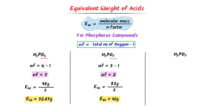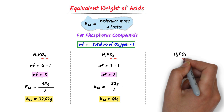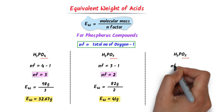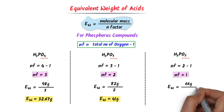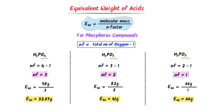In case of this compound, N factor is equal to oxygen atoms minus 1. The oxygen atoms are 2, so I write 2 minus 1 and get 1. The N factor of this compound is 1. Its equivalent weight is equal to the molecular weight, which is 66 gram, upon N factor which is 1. I get 66 gram. So the equivalent weight of this compound is 66 gram. Using this method, we can easily calculate the equivalent weight of any acid.